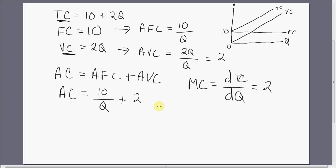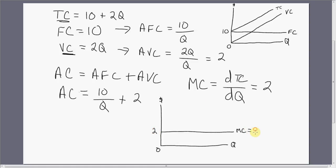Let's take a look at graphing average variable cost, average cost, and marginal cost. Marginal cost is $2. Average variable cost is $2. So in this example, marginal cost equals average variable cost. The average cost equation equals 10 divided by Q plus 2. As Q gets bigger and bigger, average cost is basically going to approach $2, so the average cost curve is downward sloping, approaching the marginal cost and average variable cost, but never quite hitting it.